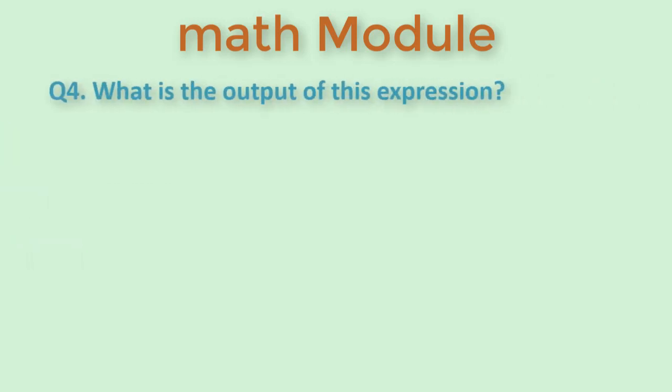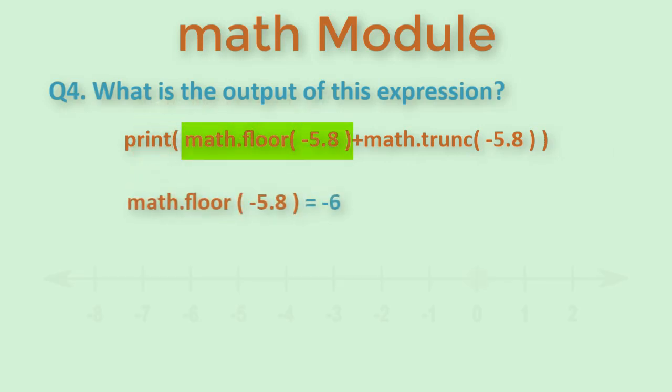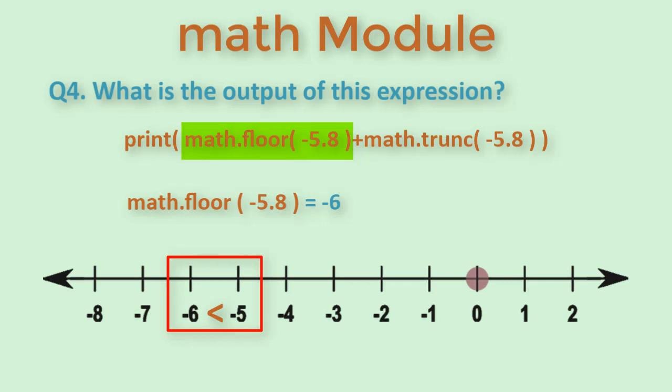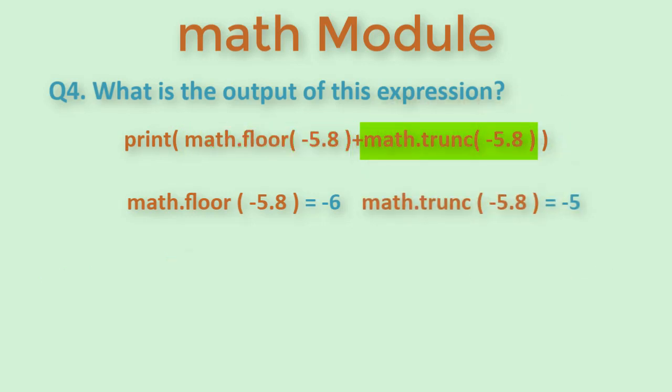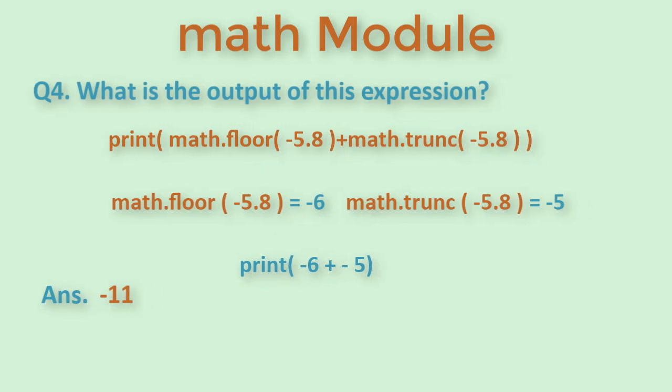Another similar question is what is the output of this expression? Here floor function will return minus 6 as it is the lower number in the number line. Truncate will return minus 5 as it will remove the decimal value. The sum of it is returned as the answer which is minus 11.